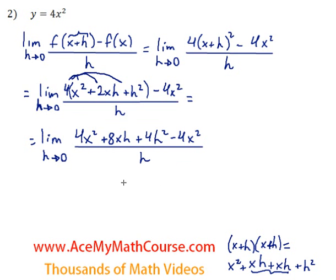Okay, now we can start cancelling things out. 4x squared minus 4x squared is 0, so they cancel out.